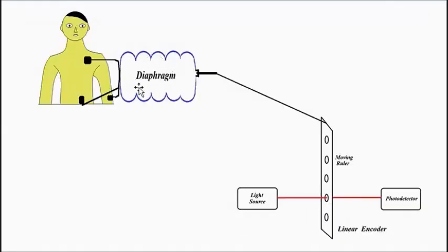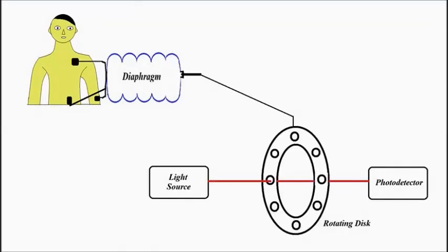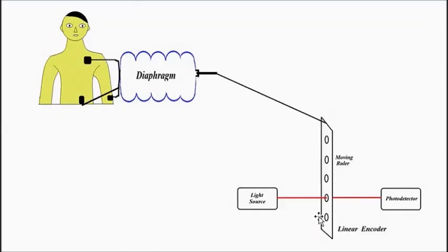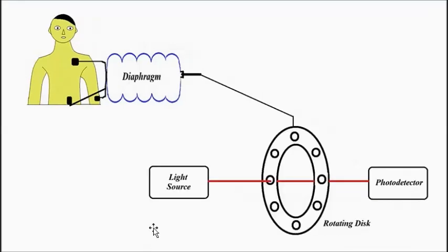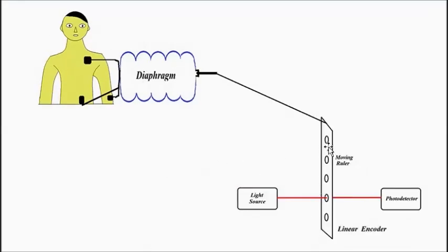So what happens is that the diaphragm that is connected to the body part where pressure is to be measured, so when pressure fluctuations happen at a specific part of the body, let's say blood pressure, the diaphragm undergoes compression and expansion. This in turn causes the ruler, the disc or the ruler, to move, either to rotate or to and fro movement.